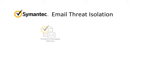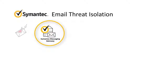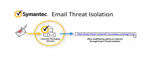In the Semantic Messaging Gateway Control Center, you add a content filtering policy that includes the fully qualified domain name of your email thread isolation instance, and you apply this policy to all incoming messages. When Semantic Messaging Gateway receives a message, this policy modifies every URL in the message to point to your email thread isolation instance.